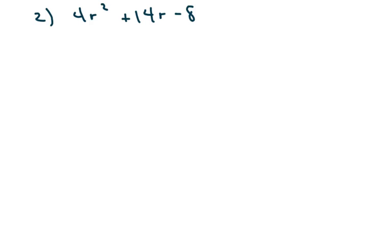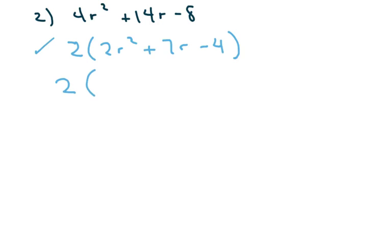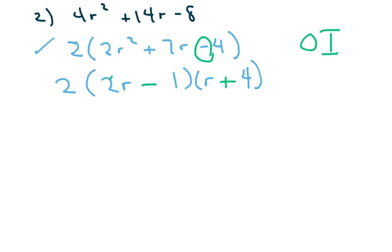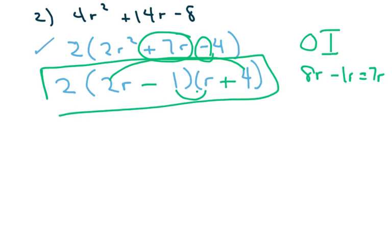The next one: I can factor out a 2 first, but I can't factor out any r. So I'm just going to factor out the 2 and get 2r squared plus 7r minus 4. Don't forget your 2. So I know it's going to be 2r and r. I need an 8 and a 1, so I'm going to put a 4 here and a 1 here. Since this is negative, the signs are opposite — plus and minus. Checking outer-inner: 8r minus 1r is 7r, which equals 7r. That middle term is the key. So that's it for that one.